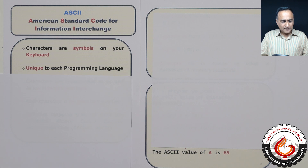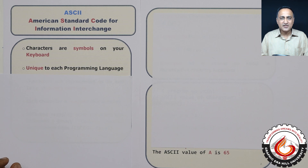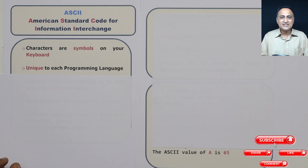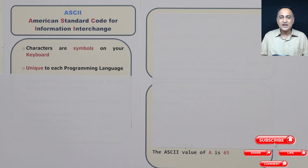If you look at what characters are used, they vary from programming language to programming language. Not every programming language is going to use the same character set. If you take a look at my character set lecture earlier, I have shown you what are the legal characters that are permitted to be used in a C program. If you look at COBOL, Fortran, or Java, they may not have the same character set which is permitted by C. So the characters permitted in each language are unique to that programming language.